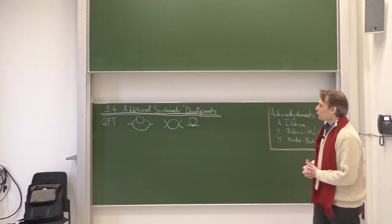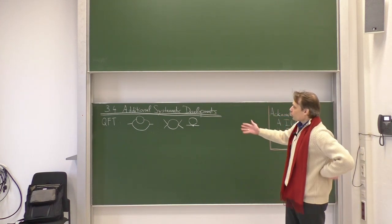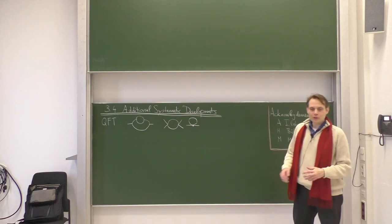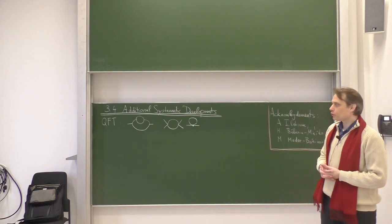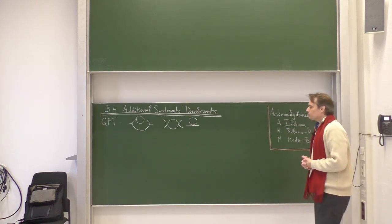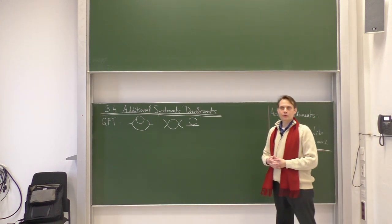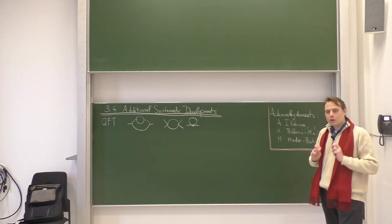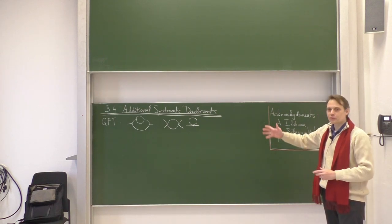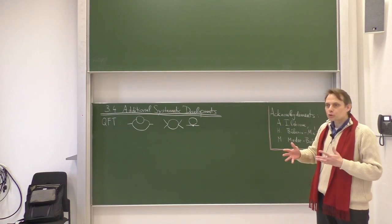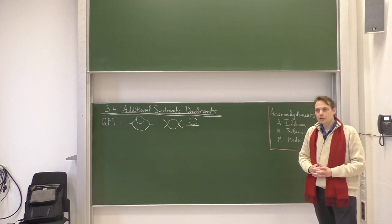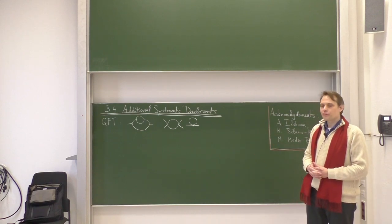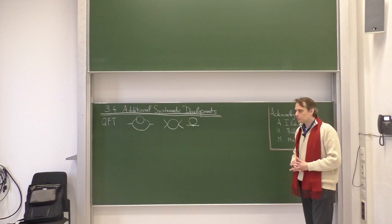Let us continue with our lecture. Today we will start a new chapter, which means we will go one level deeper and do additional systematic developments. We will uncover a few more details on the mathematics of Feynman graphs and systematic methods to describe them with a very nice formalism. This formalism is powerful but nevertheless rather simple. We will probably prove 20 or 30 small theorems or statements which will be useful for our later studies of renormalization, but as you will see, they have a much more general usefulness.